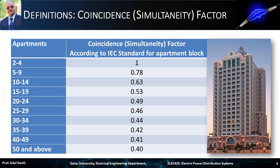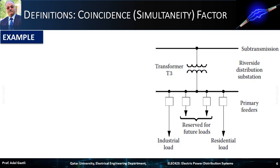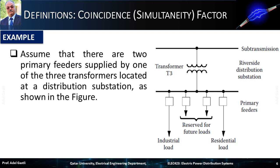IEC standards also provide coincidence factor values for apartment blocks with different numbers of apartments. Let's consider an example which will explain how we can calculate some of the previously introduced load factors. In this example, assume that there are two primary feeders supplied by one of the three transformers located at a distribution substation, as shown in the figure.